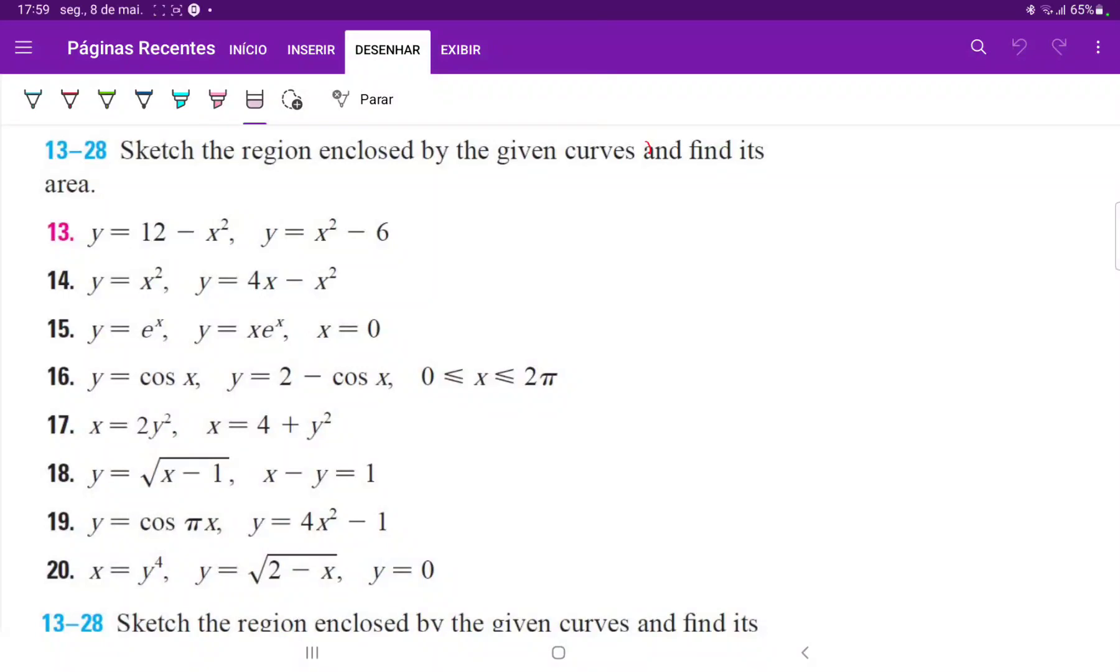For number 14 we have to draw the curves and find the area between them. I will put my axis here. My first curve is just the regular parabola that goes like this. This is y equals x squared.